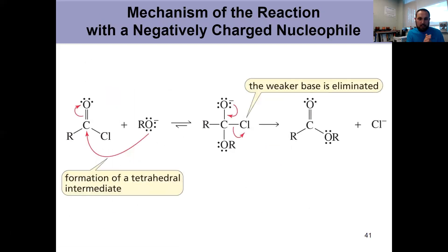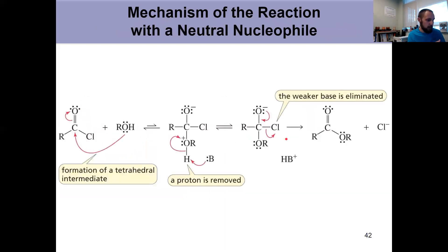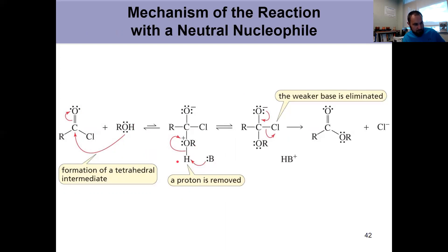With an alkoxide (RO⁻) reacting with an acyl chloride: the strong base attacks the electrophilic carbon, the pi bond breaks forming the tetrahedral intermediate, which is unstable and collapses — chloride is the weaker base so it leaves, and you've converted an acyl chloride to an ester. When using an alcohol instead of an alkoxide, the mechanism is the same except there's a proton present, so you get a protonated intermediate that must be deprotonated first, then the pi bond reforms, chloride leaves, and you form the same ester product.